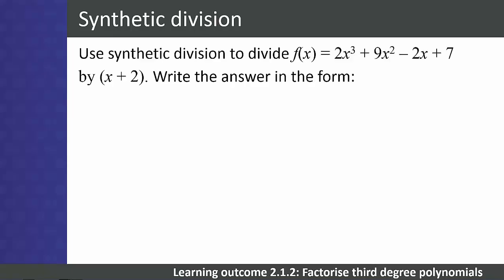Use synthetic division to divide f(x) = 2x³ + 9x² - 2x + 7 by x + 2. Write the answer in the form f(x) = q(x) × g(x) + r(x). You may have seen different ways of laying the problem out, but the steps are always the same.